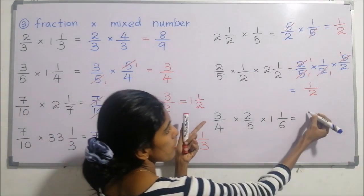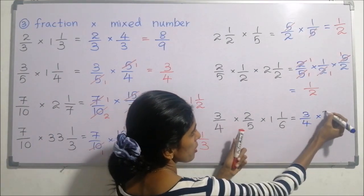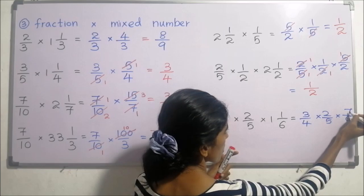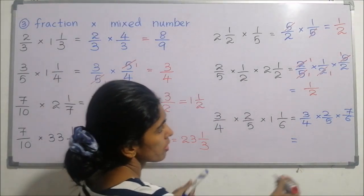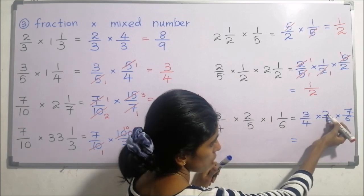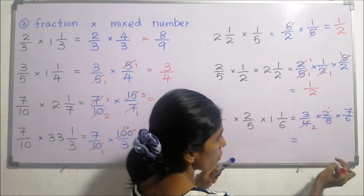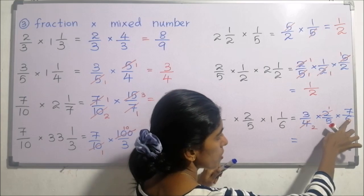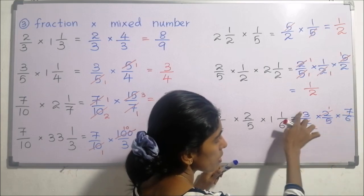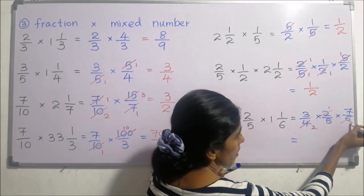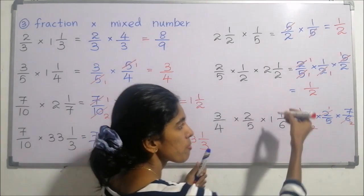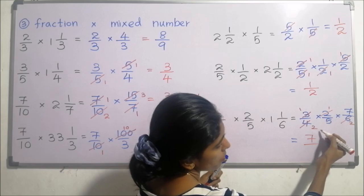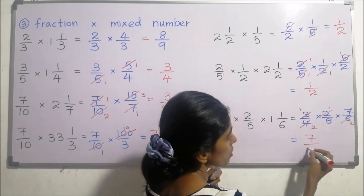Next: three over four multiplied by two over five multiplied by one and one sixth. Convert: six times one is six, plus one is seven — seven over six. Simplify: four and two — two times one, two times two; then six and three — three times two, three times one. Multiply remaining: seven over two times five is ten, times two is twenty — seven twentieths.